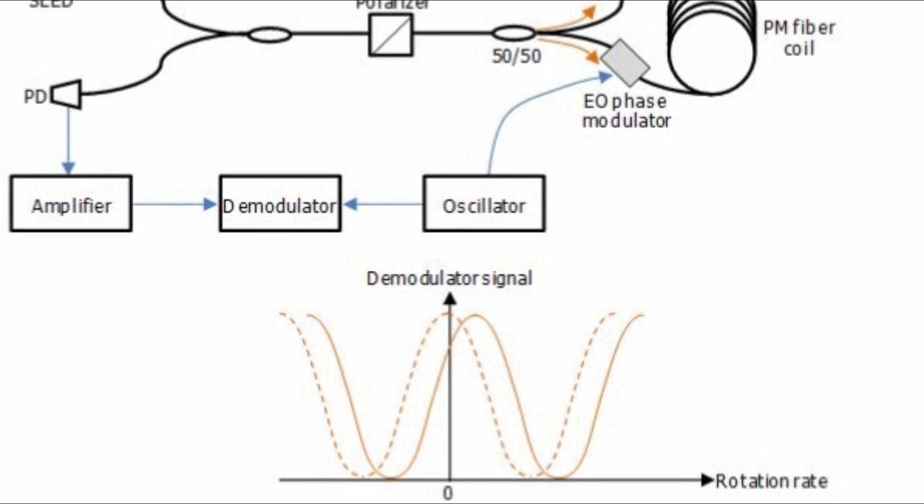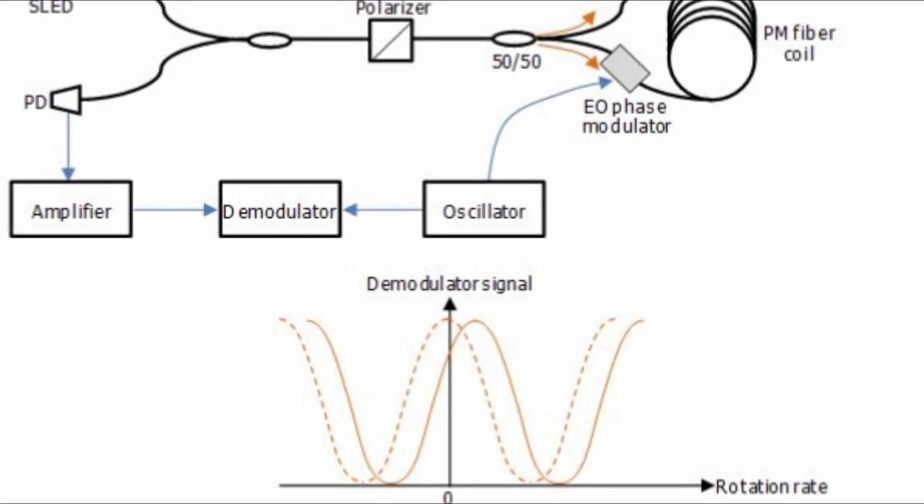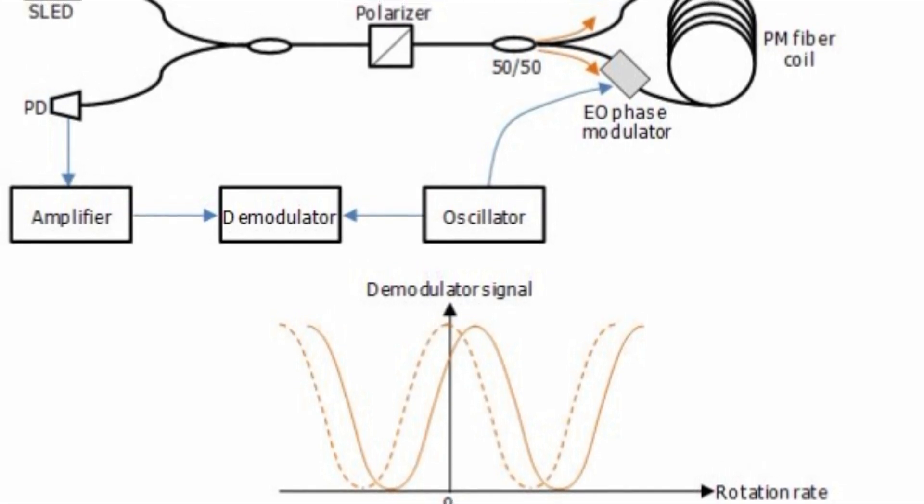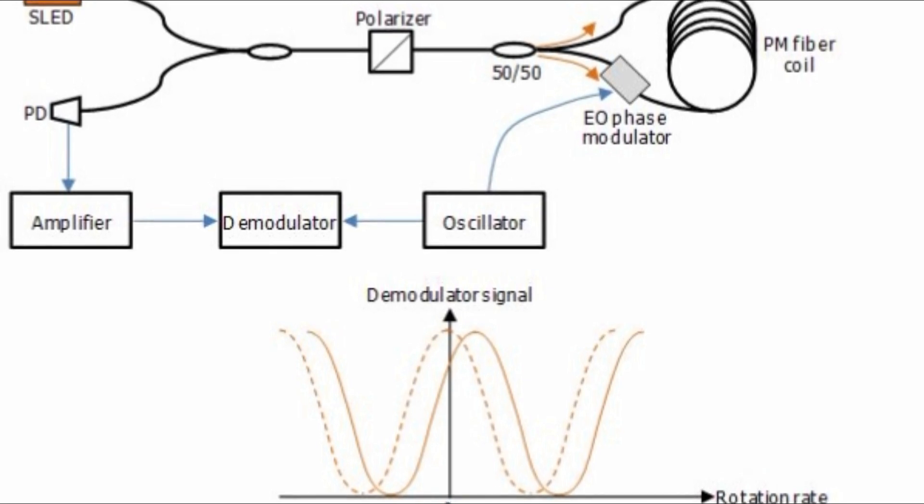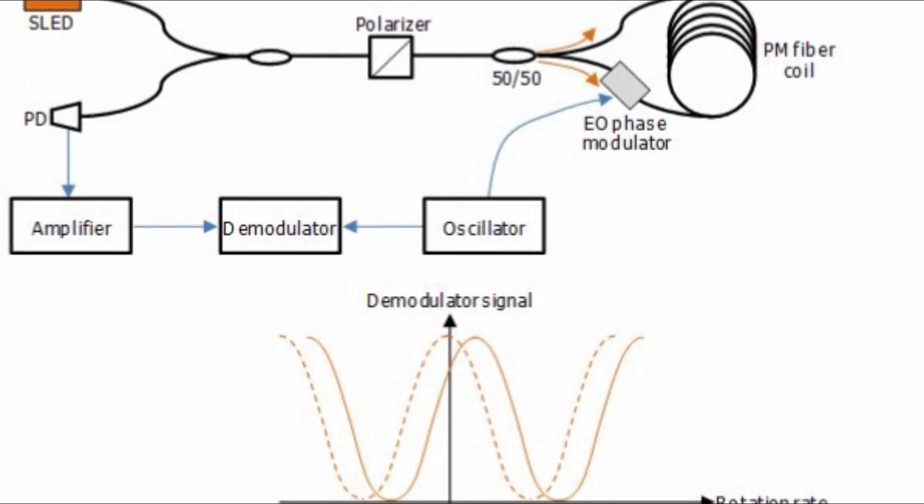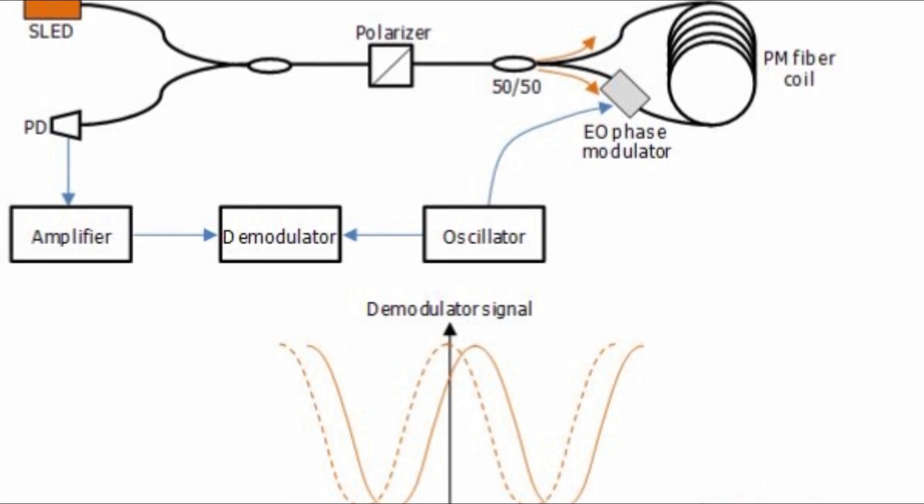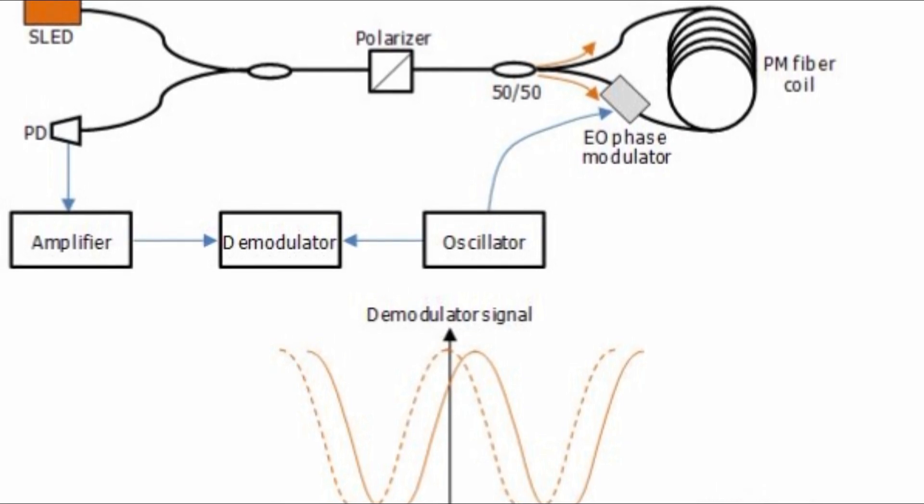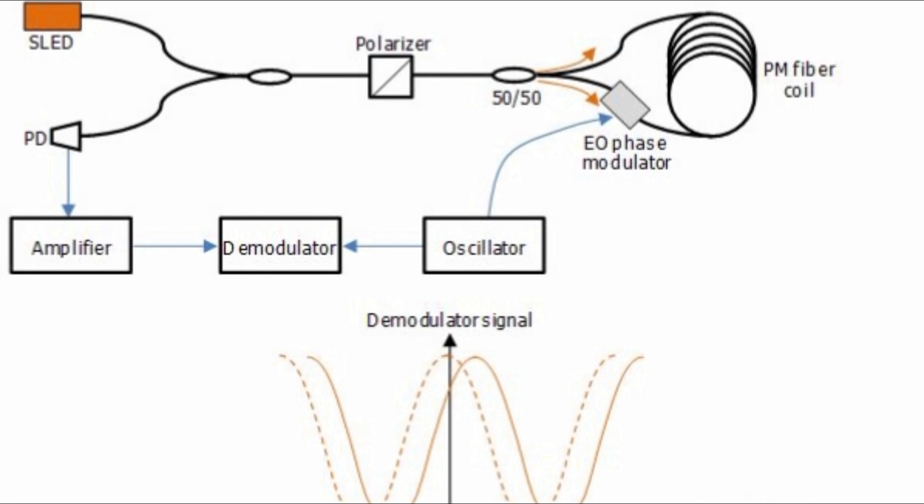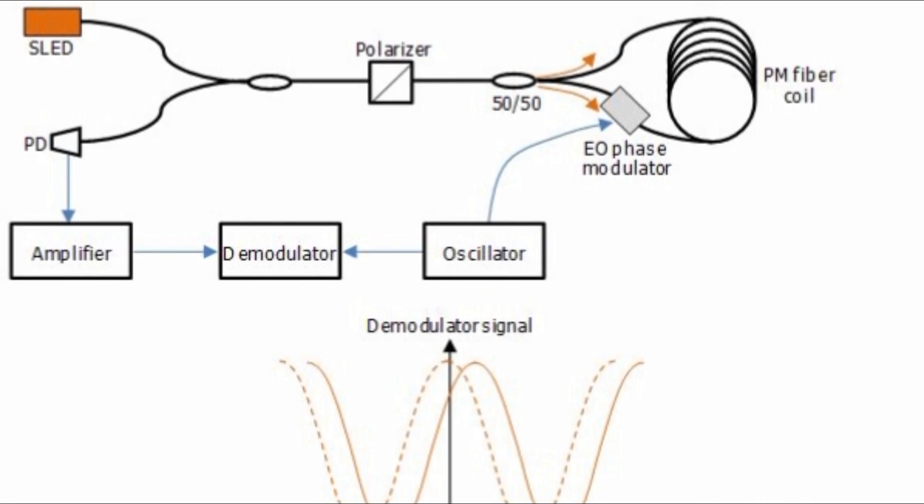A fiber optic gyroscope senses changes in orientation using the Sagnac effect, thus performing the function of a mechanical gyroscope. However, its principle of operation is instead based on the interference of light which has passed through a coil of optical fiber.